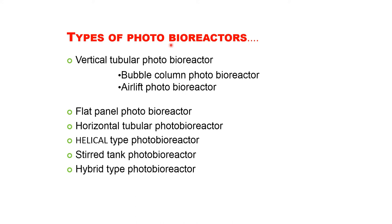There are different types of photobioreactor. One is the vertical tubular photobioreactor, which is further divided into bubble column photobioreactor and airlift photobioreactor. Another one is flat panel. Third is horizontal tubular photobioreactor. Fourth is helical type photobioreactor. Then stirred tank photobioreactor, and the last one is hybrid type photobioreactor.